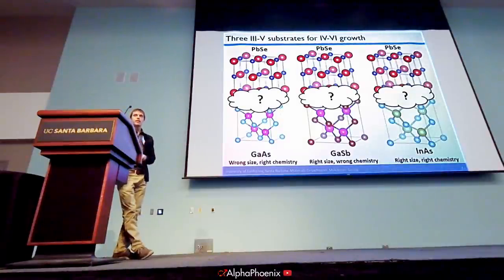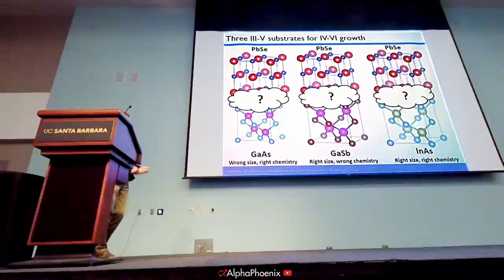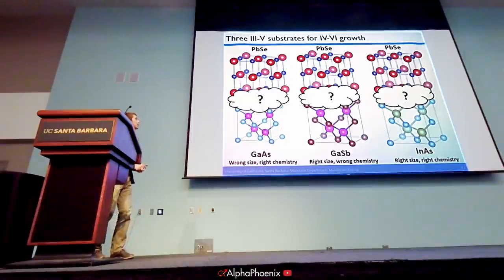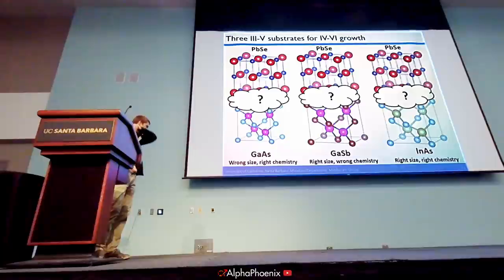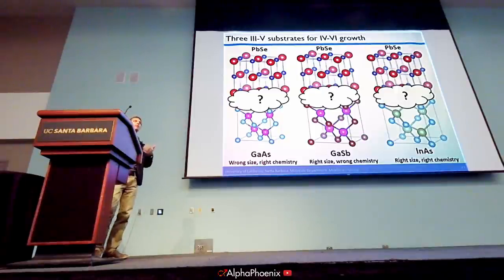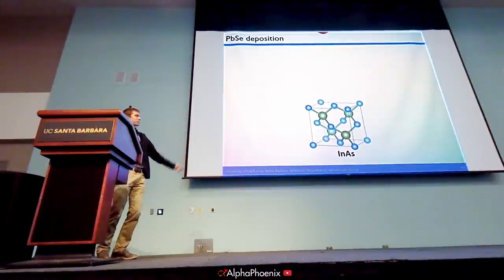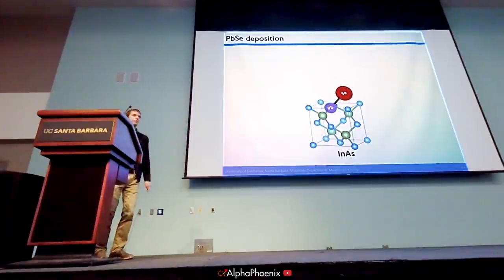The three substrates we've been using for growth are all from the 3-5 system of semiconductors — gallium arsenide and related materials — and they all have different surface chemistries and different lattice parameters. These different sizes and chemistries let us sort of separate those variables and see how they affect the growth of the lead selenide crystal. What I like to imagine is one molecule of lead selenide flying out of the effusion cell, hitting that reconstructed surface — and at that point, what does it do? There are a lot of kinetic and thermodynamic considerations because it's going to bounce around on that surface.